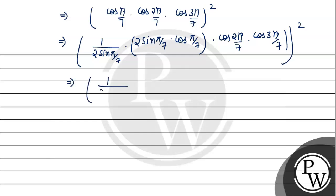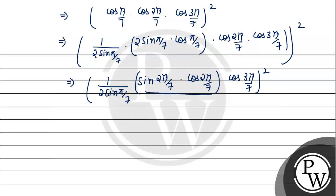We continue applying 2 sin A cos A = sin 2A. Multiplying and dividing by 2 again gives 1/(4 sin(π/7)) · sin(4π/7) · cos(3π/7). Again we need to apply the identity but 4 and 3 don't match directly, so we rewrite sin(4π/7) · cos(3π/7) by multiplying and dividing by 2 to get 1/(8 sin(π/7)) · sin(8π/7) raised to the power 2, after applying sin(4π/7)·cos(4π/7) → sin(8π/7) in the next step.